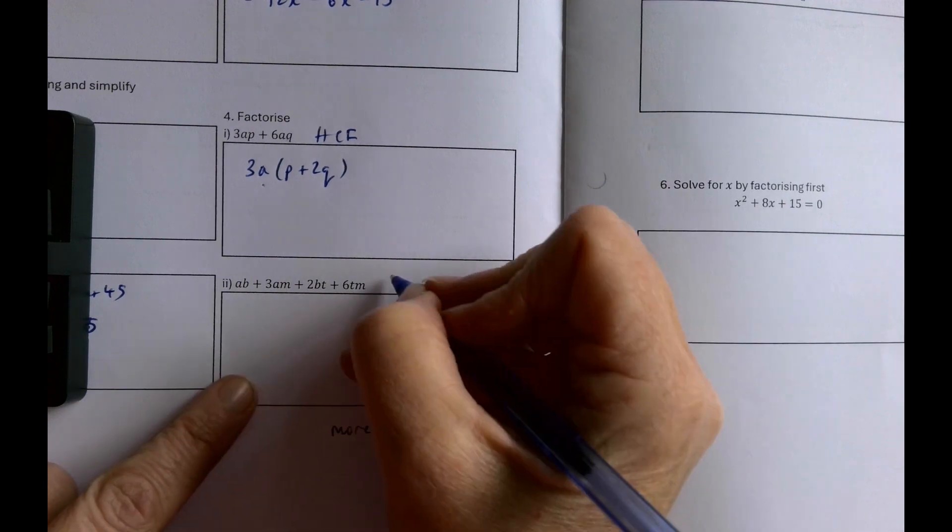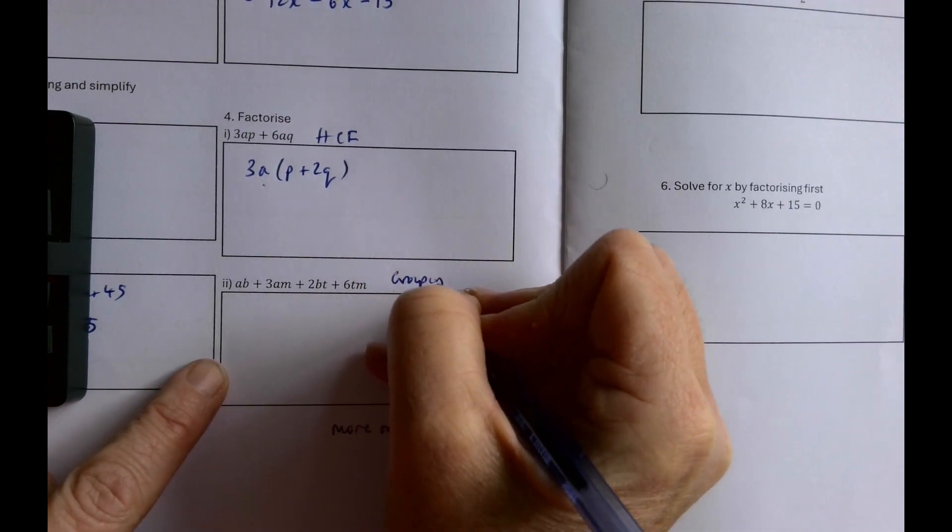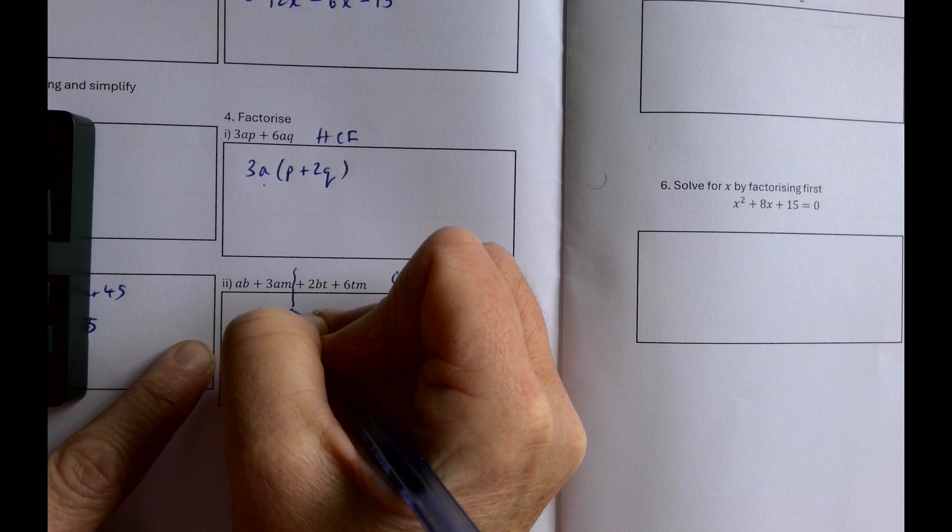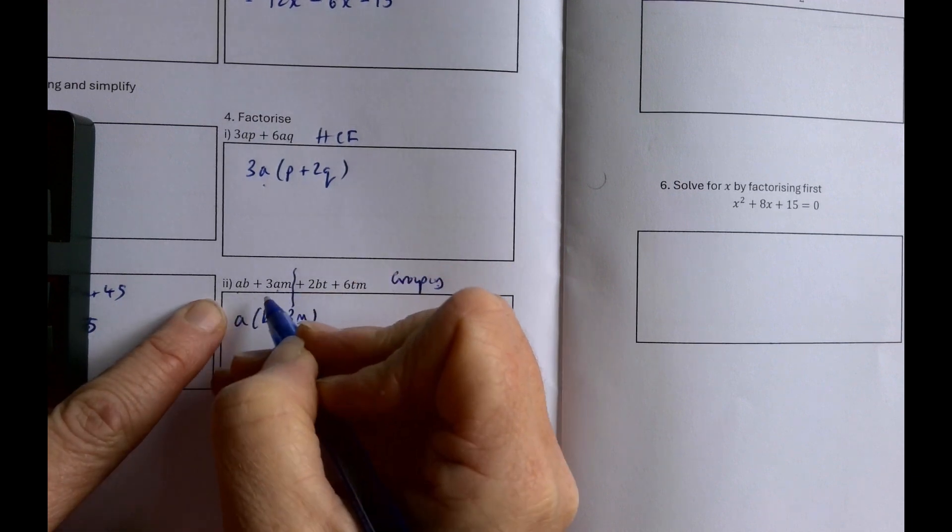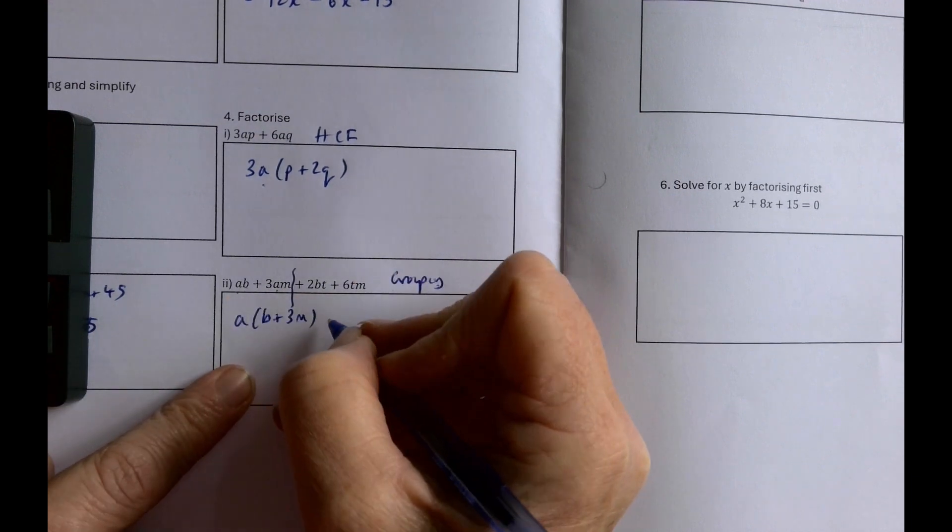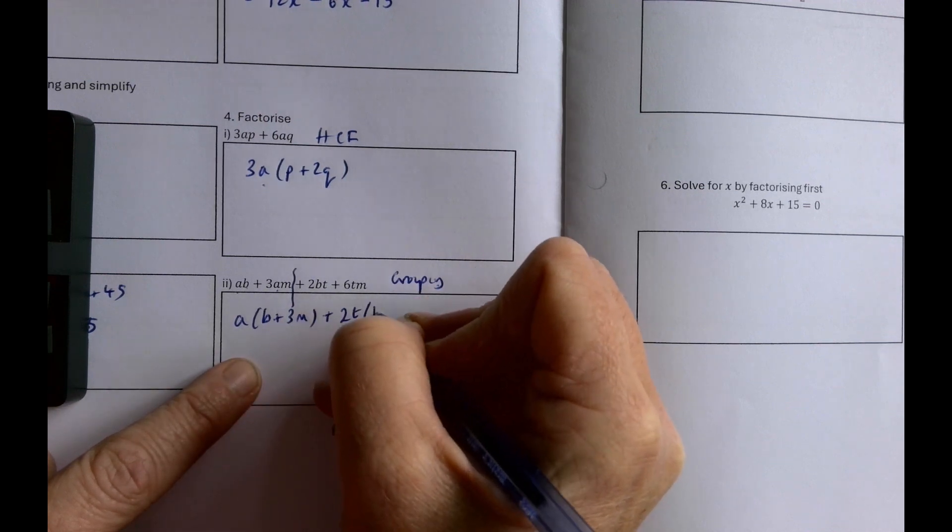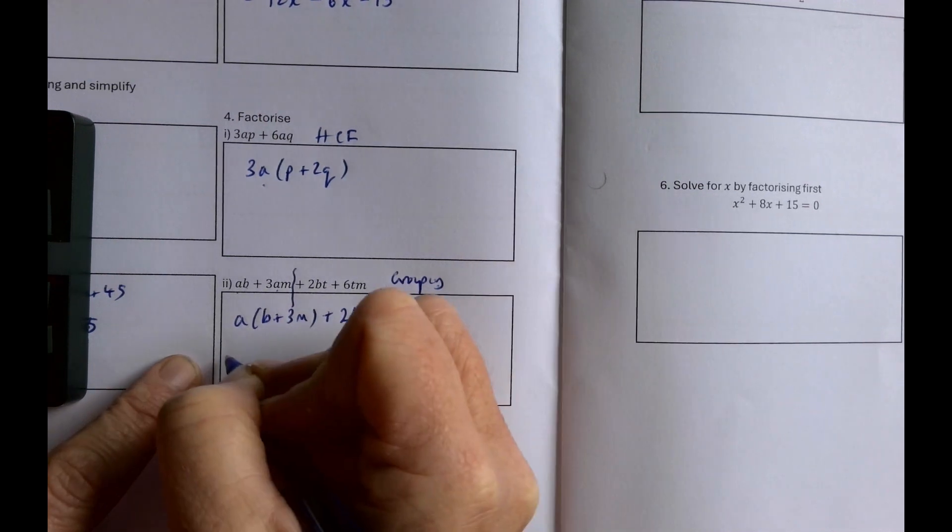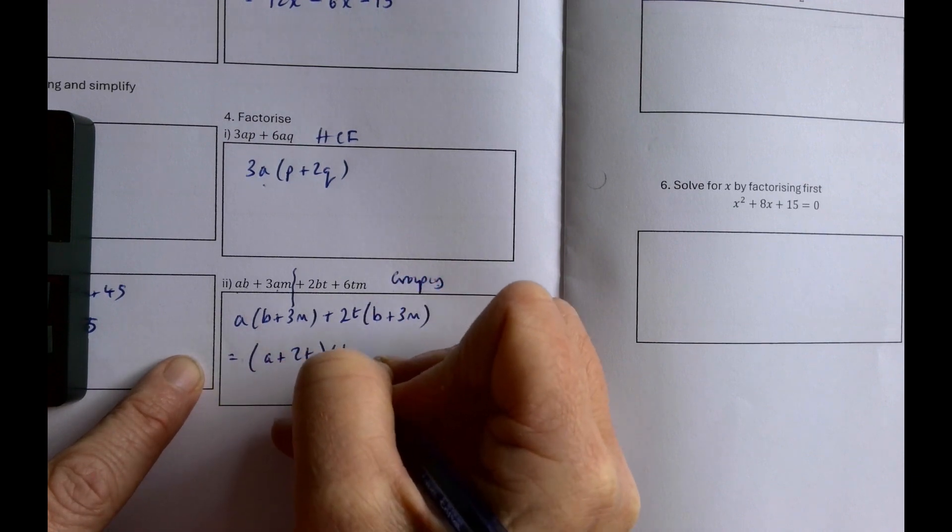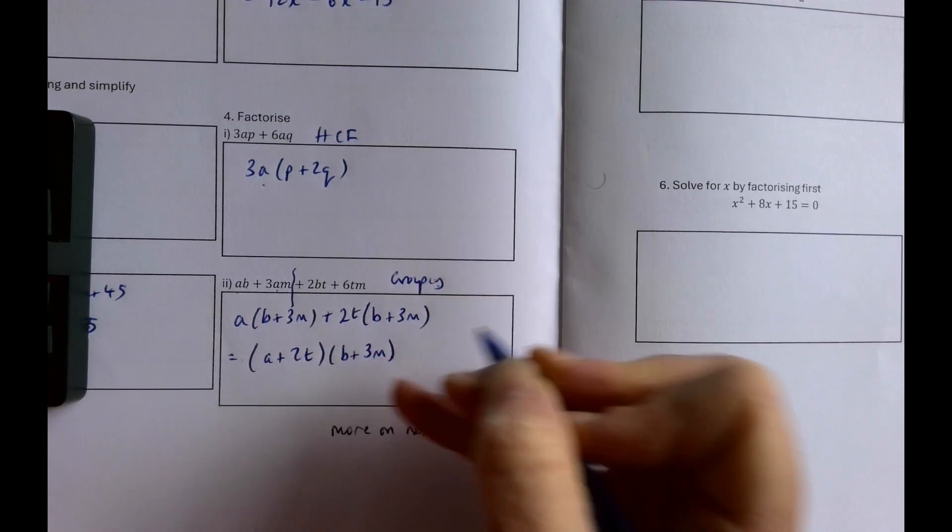Here I've got a grouping because there's four terms, so I'm going to split it down the middle. a by b plus 3m, because a is in common and b and 3m is what's left. And what's in common here is 2t by b plus 3m. So it's a plus 2t by b plus 3m.